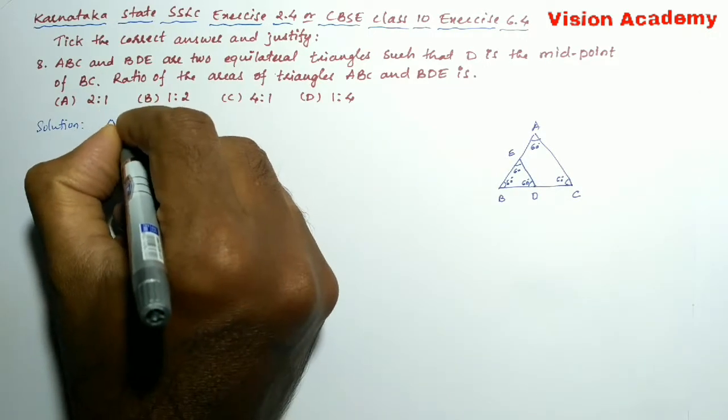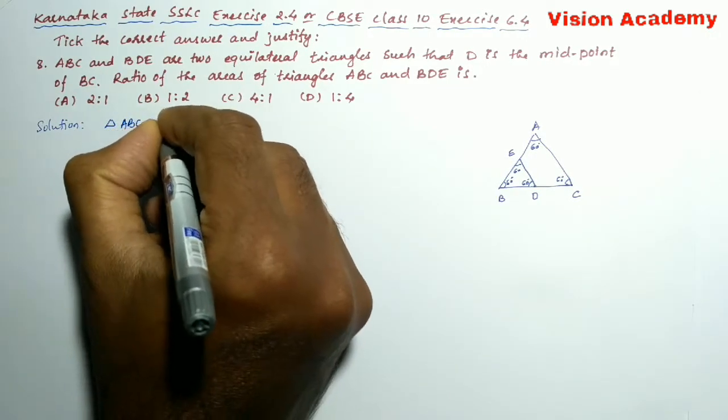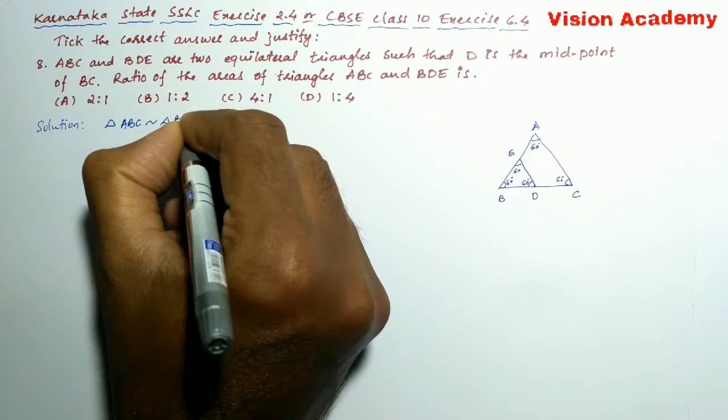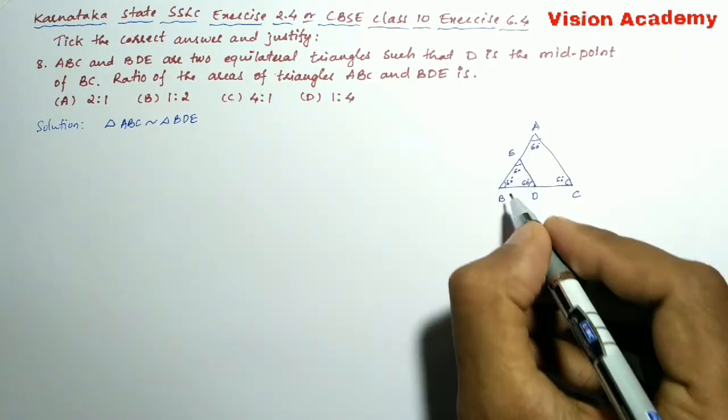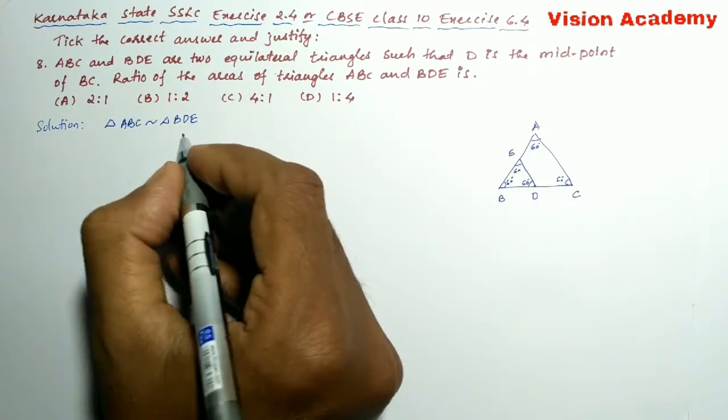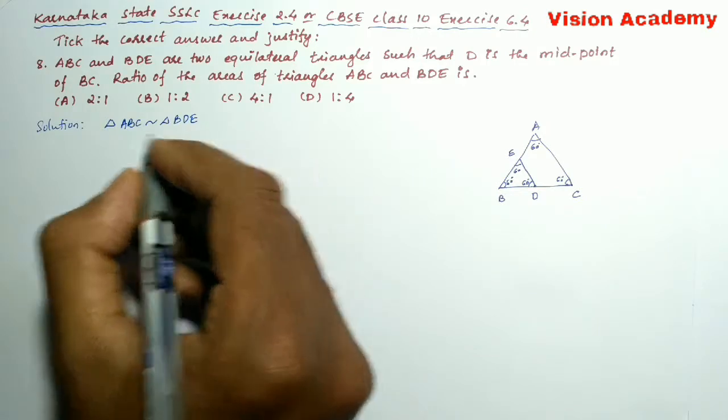Triangle ABC is similar to triangle BDE, because both of these two are similar.